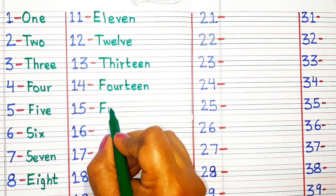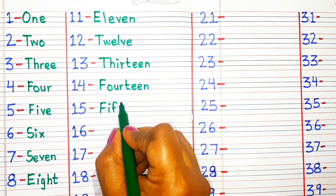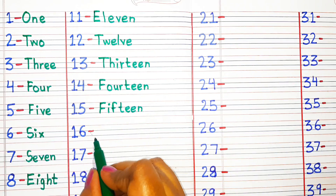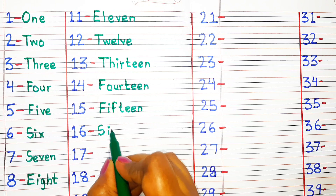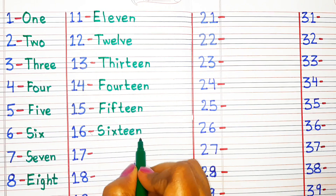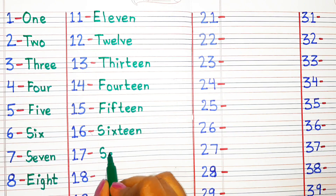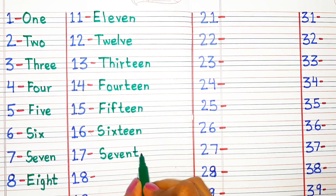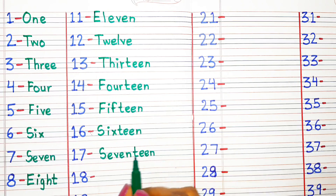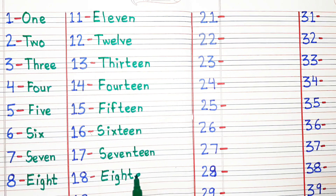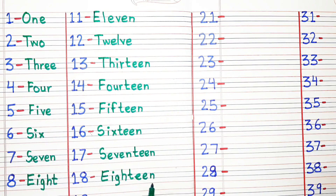F-I-F-T-E-E-N 15. S-I-X-T-E-E-N 16. S-E-V-E-N-T-E-E-N 17. E-I-G-H-T-E-E-N 18.